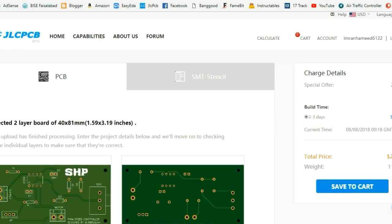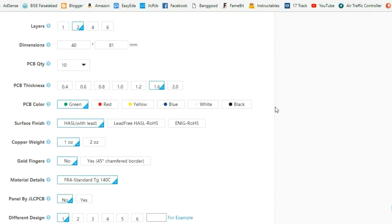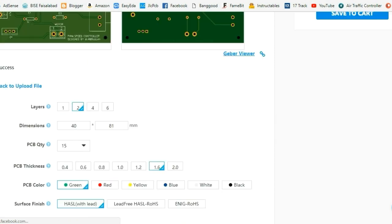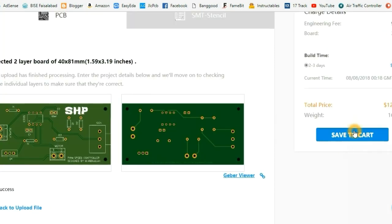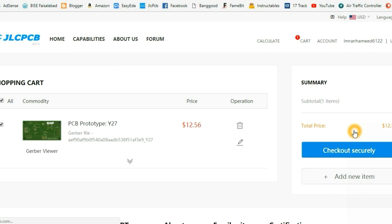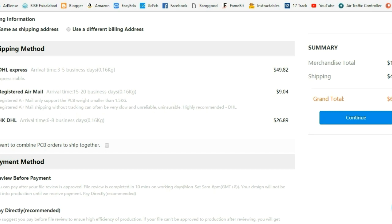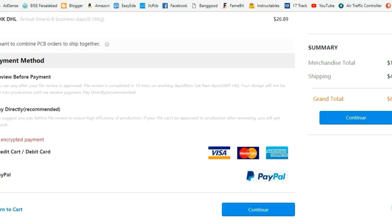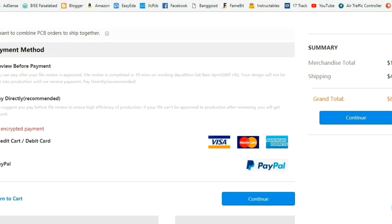And here, after changing some parameters, I saved this project to the cart, and from the cart I clicked on checkout securely. And here, friends, after choosing the shipping method and payment method, you can pay for your order, and by DHL you will receive your order within a week.